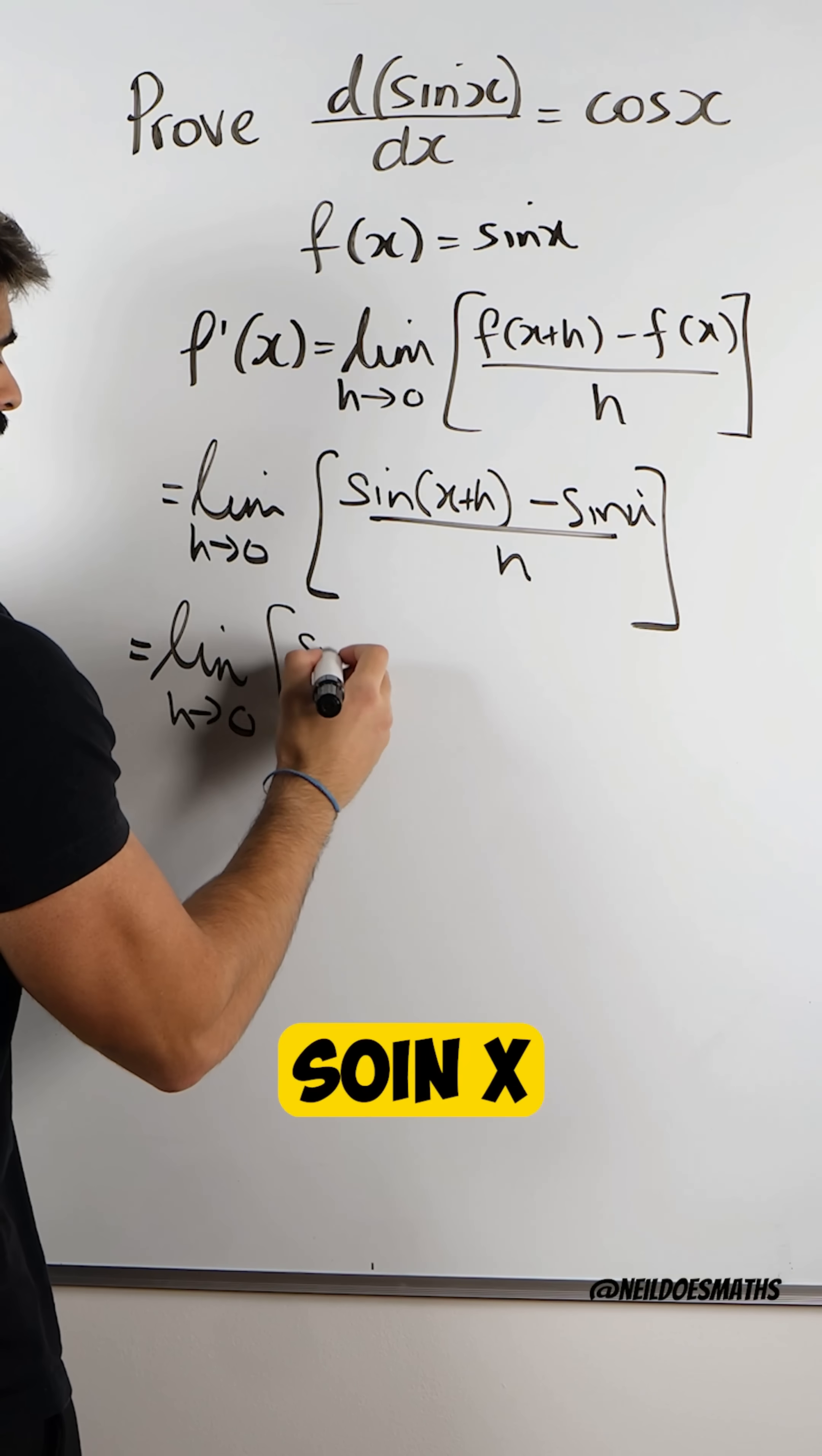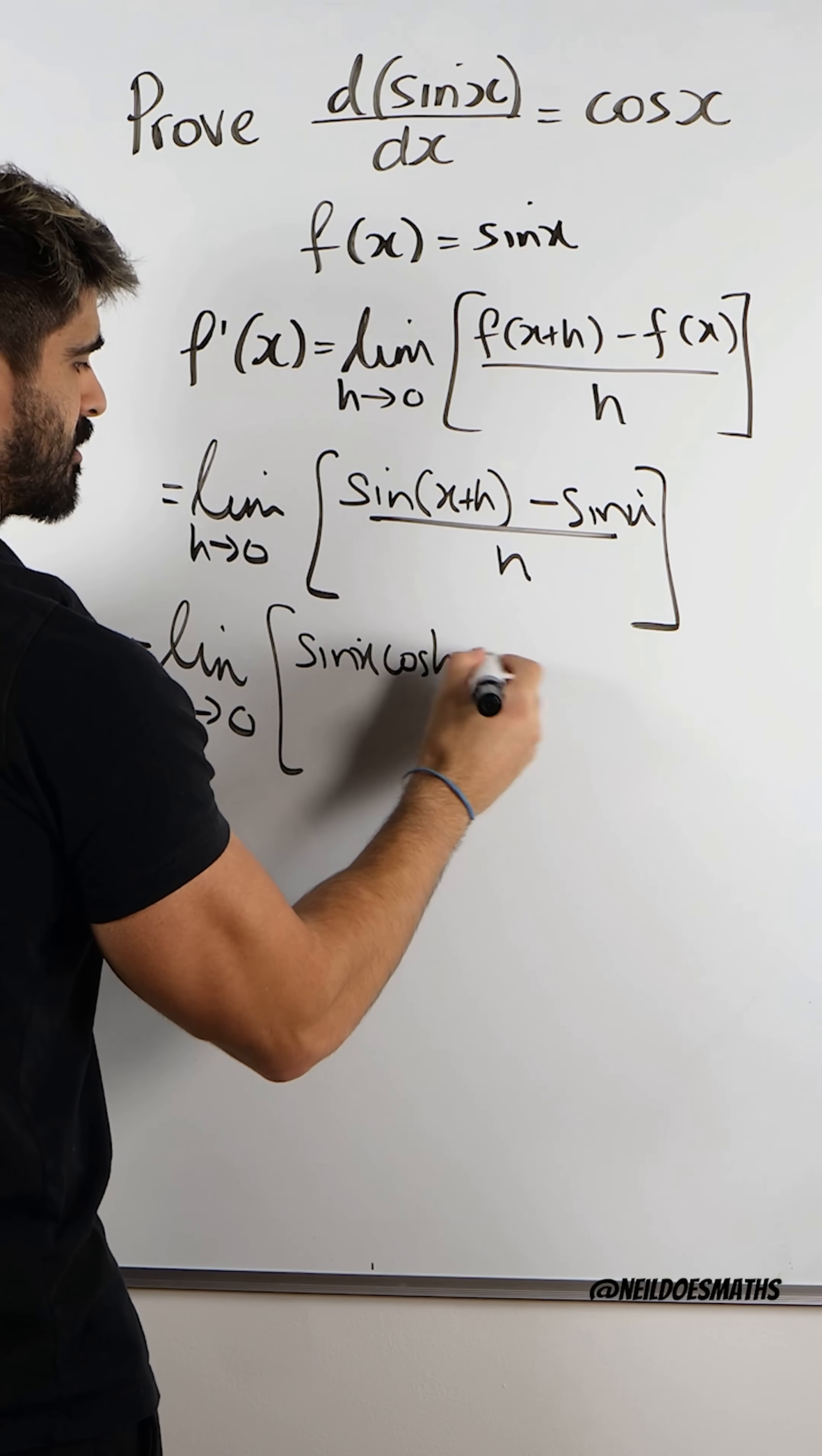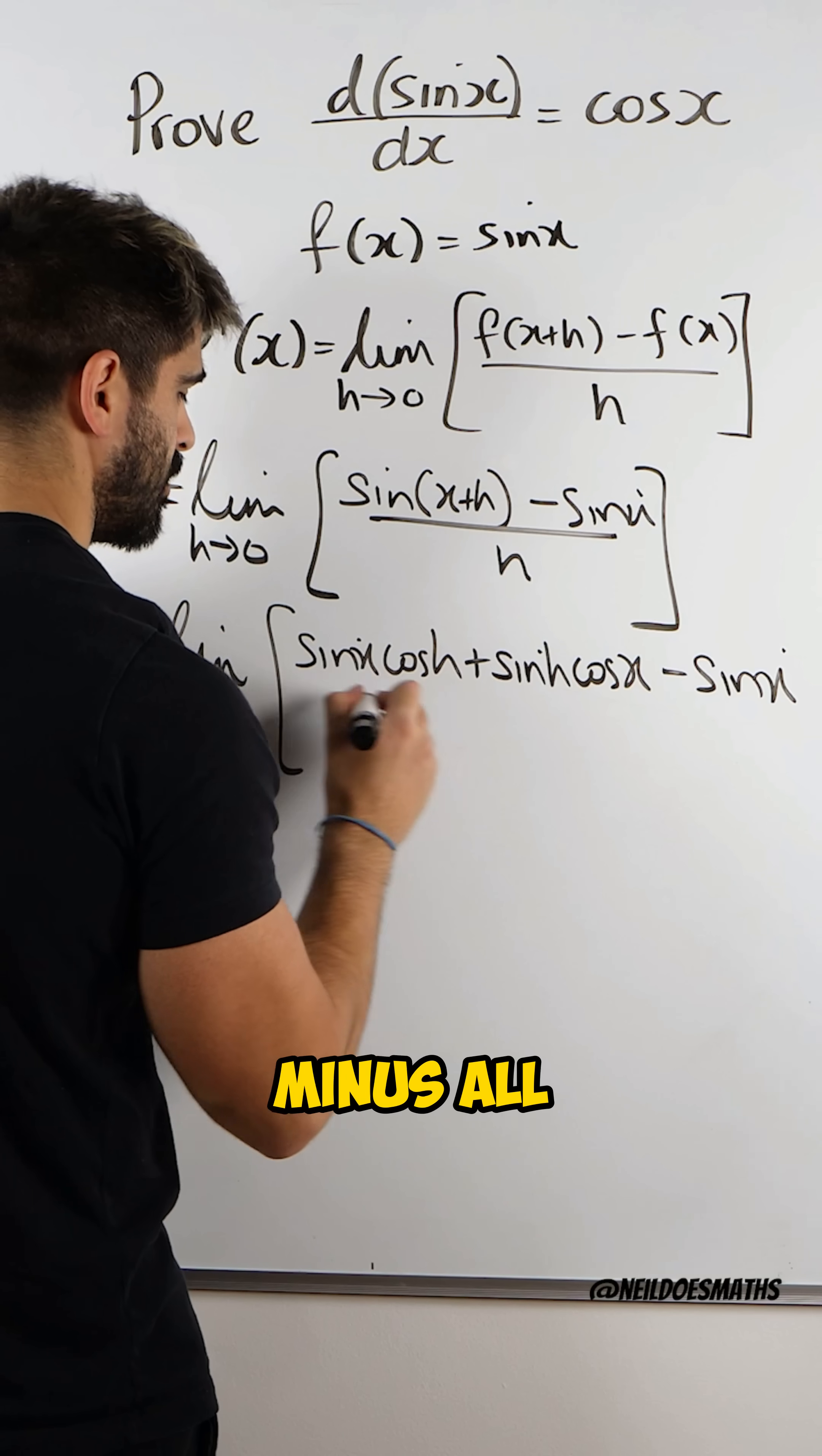It is sin(x)cos(h). It goes sine cos, and sine keeps the sine the same. So plus sin(h)cos(x). Then we have minus sin(x), all divided by h.